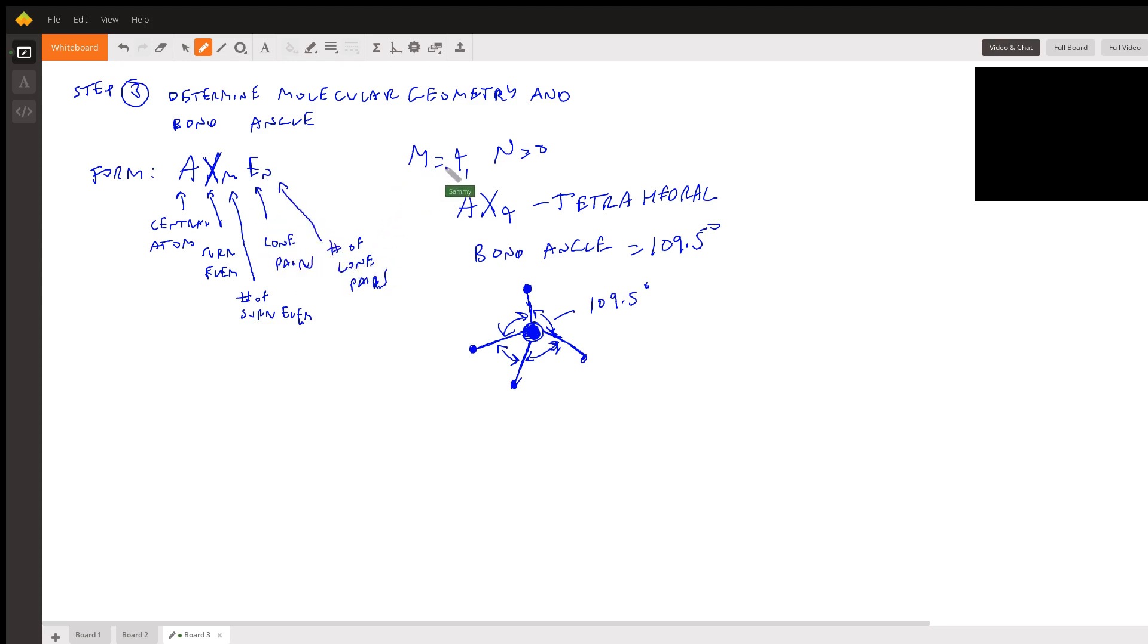So we already found the M and the N from before. So we just plug them into here and we'll get AX4, which is tetrahedral.